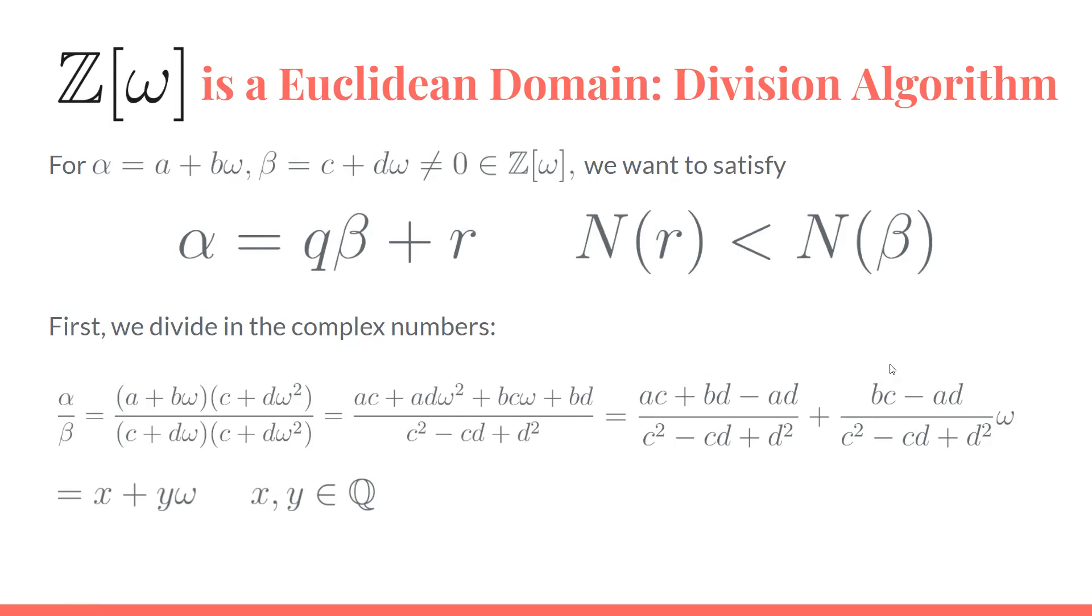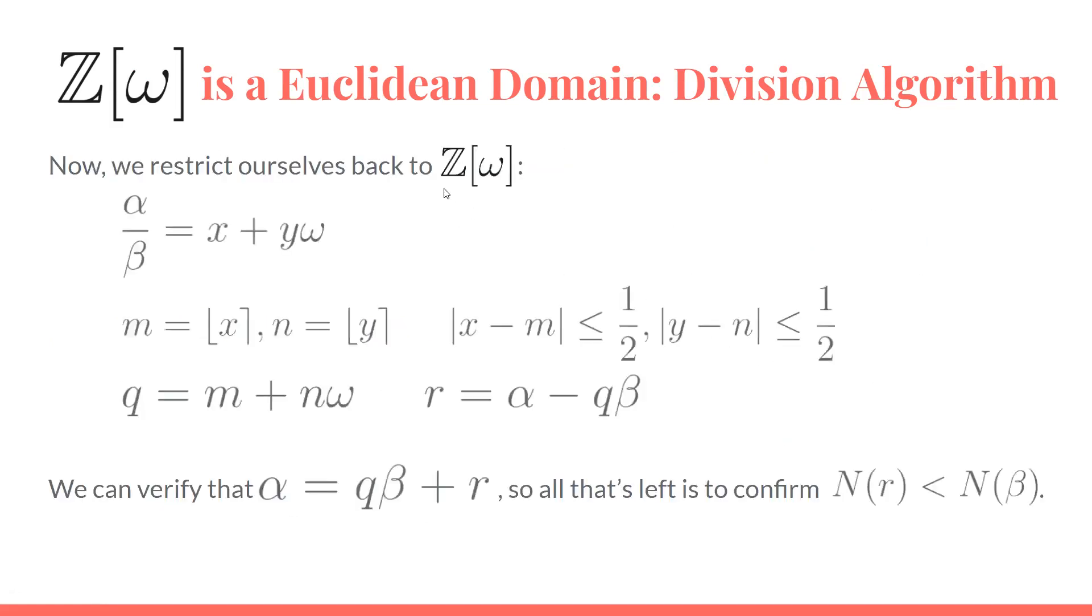We end up with this kind of ugly term here, which we'll consolidate to be x + yω. Note that this is not an Eisenstein integer because x and y are going to be rational numbers instead of integers. This is not guaranteed to be an Eisenstein integer, but we're going to restrict ourselves back into that domain now.